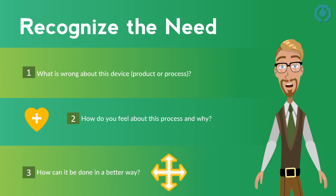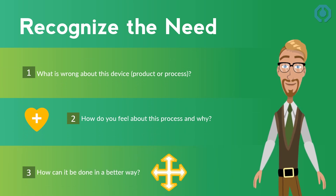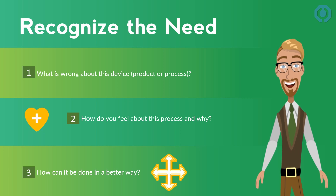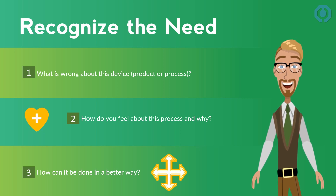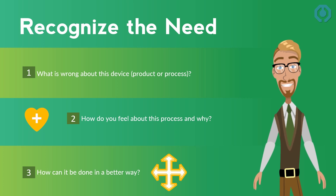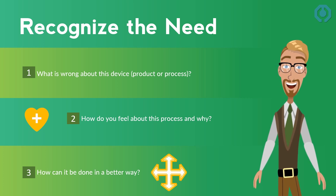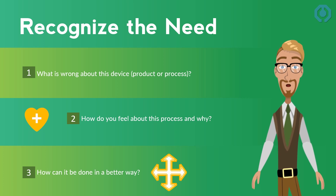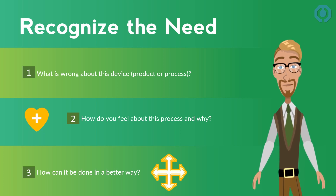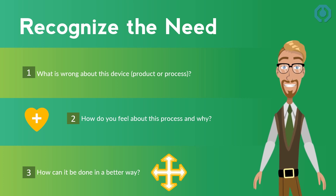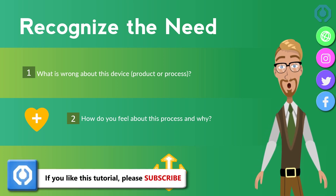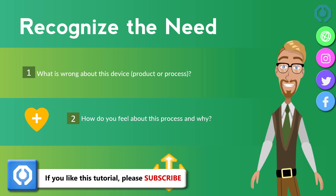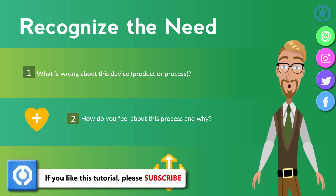The first step is to establish the ultimate purpose of the project. Usually, this is a general statement of the client's dissatisfaction with the current situation. Some key questions that you can ask to recognize the need are: What is wrong about this device or system? How can it be done in a better way? How do you feel about this process and why? For example, one can say the washing machine usually sounds very loud in high speed rotation. This is a general statement that does not comment on the design approach. It does not say that the washing machine should be less vibrant or more sound proof.